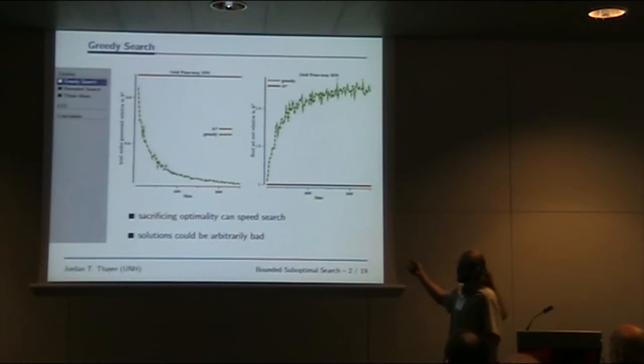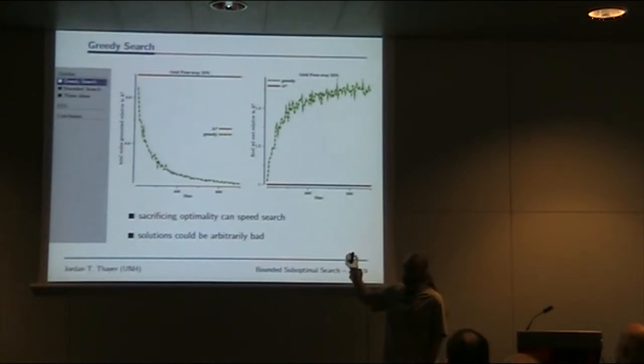On the right we have the unfortunate news. Again, problem size on the x-axis. On the y-axis now we have solution quality relative to A-star. A-star always finds the optimal solution. Greedy doesn't. The gap between the solution found by greedy and A-star grows as problem size grows. We can sacrifice optimality to go quickly, but solutions can be arbitrarily bad.